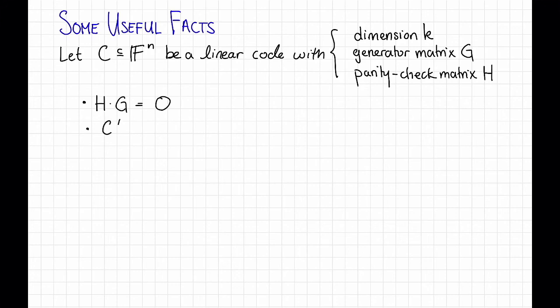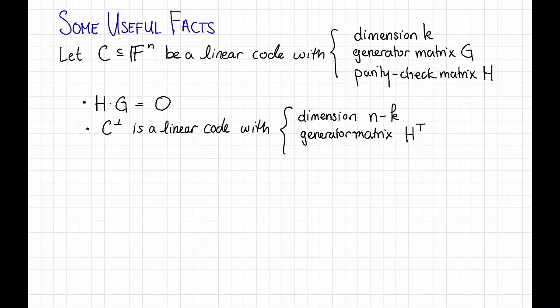Second, the dual of C, C perp, is itself a linear code with dimension n minus k, generator matrix H transpose. So we take the parity check matrix for C, and that becomes the generator matrix for C perp,